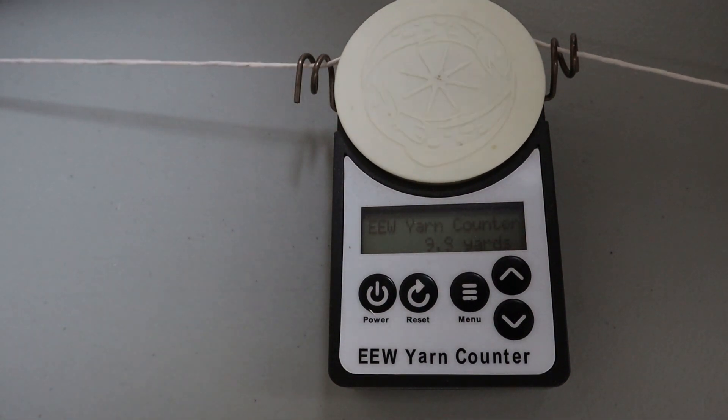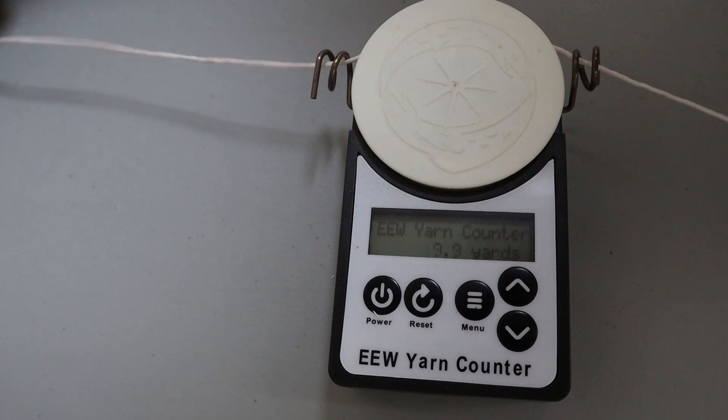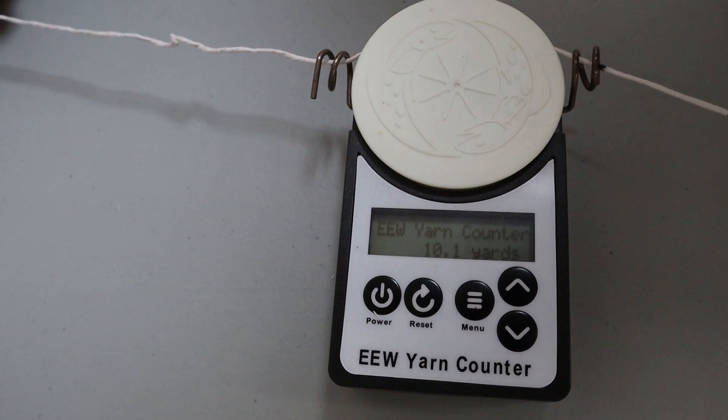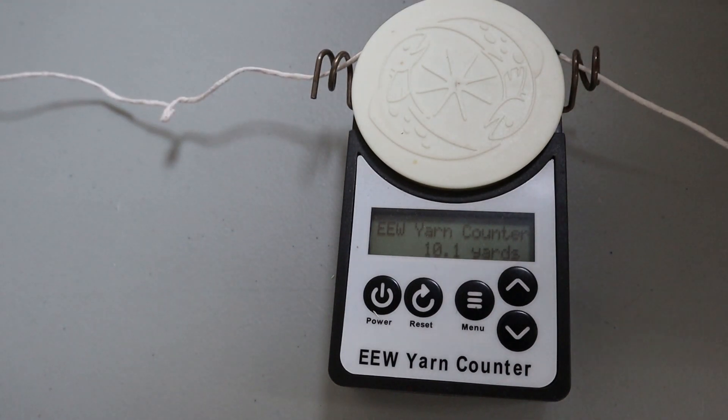So here comes the black mark, and we'll see how far it gets. So 10.1 yards when it's supposed to be 10 yards sounds like there's a 1% error. And I guess you could say that, but most likely in this case, it's just that I stretched the string a little bit more when I was measuring it with the tape measure, and a little bit less when it was going through the yarn counter.